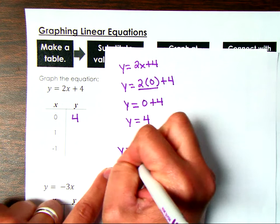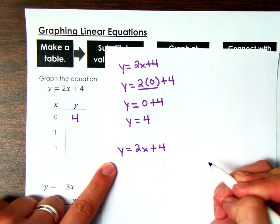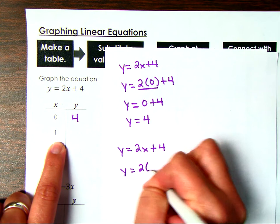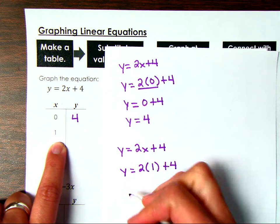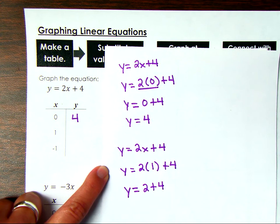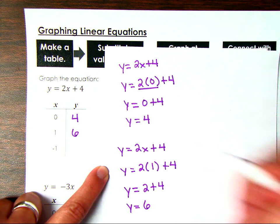Now I'm going to look for my ordered pair when x is 1. I always start with my equation: y equals 2x plus 4. When my input is 1, y equals 2 times 1 plus 4. No matter what x is, you're going to multiply it by 2 first and then add 4 to get y. So 2 times 1 is 2, and 2 plus 4 is 6. When my input is 1, my output is 6.